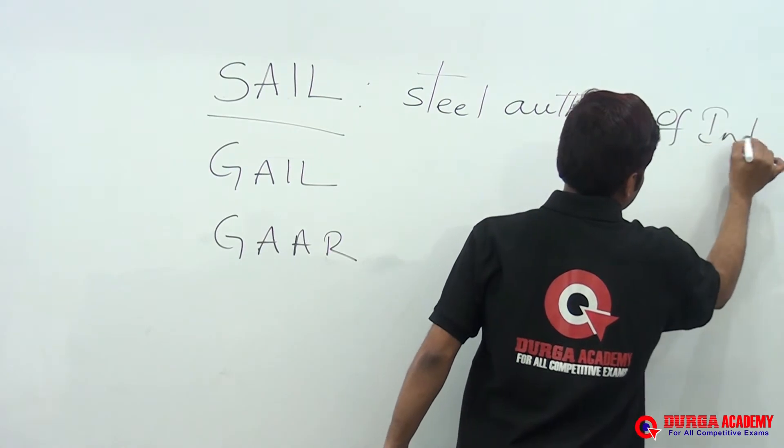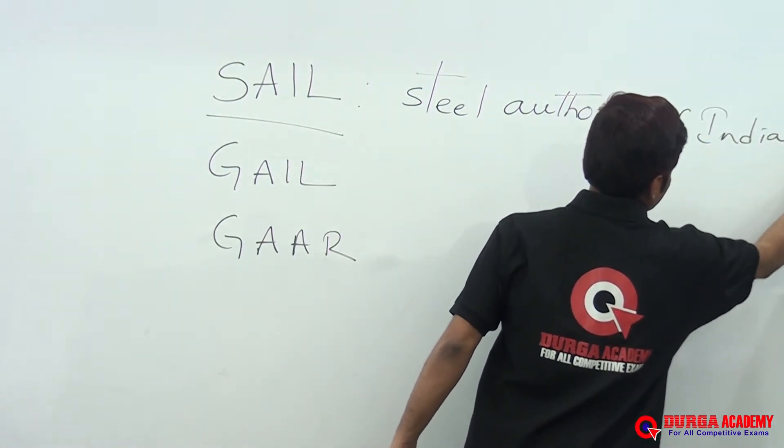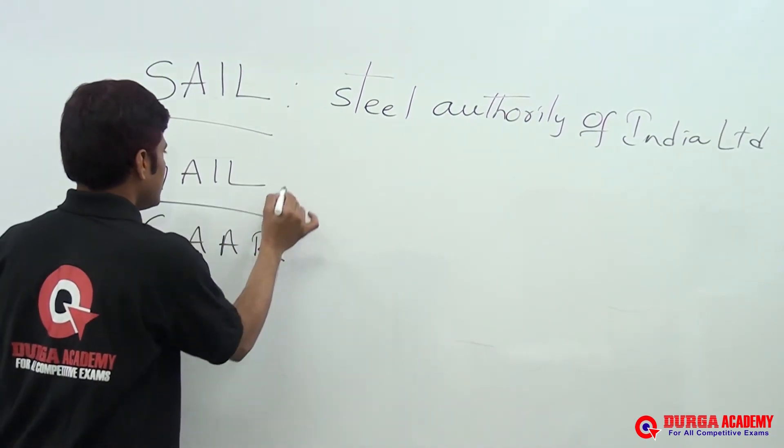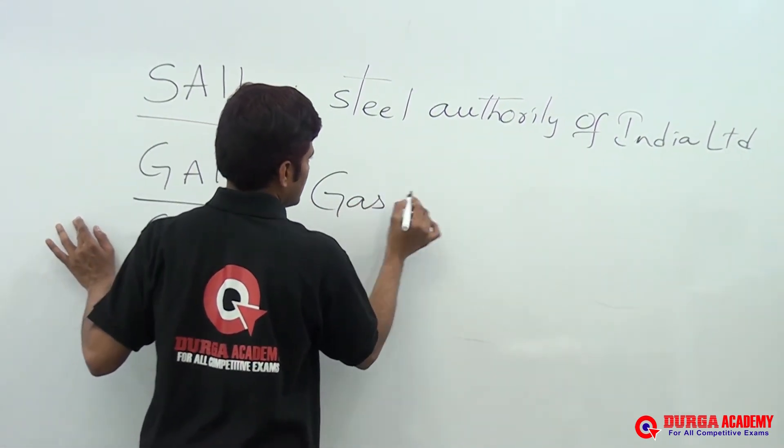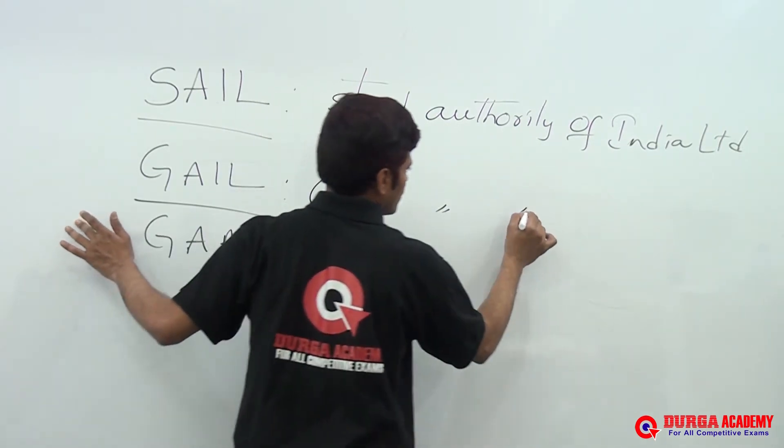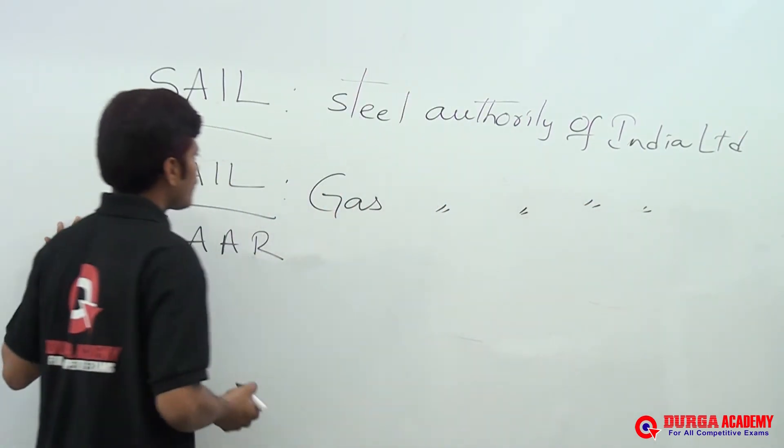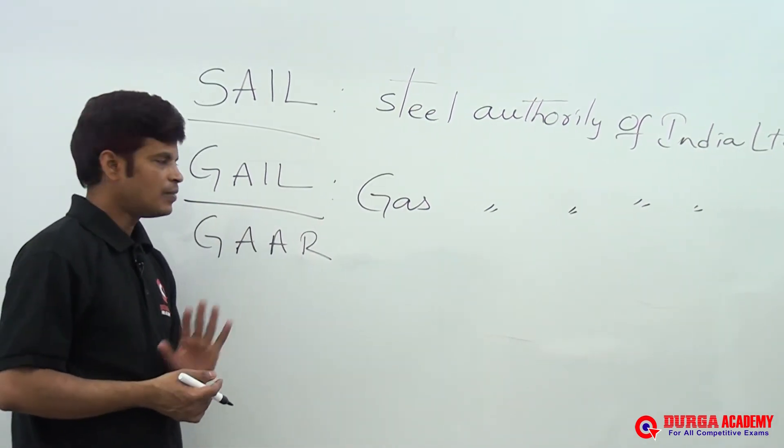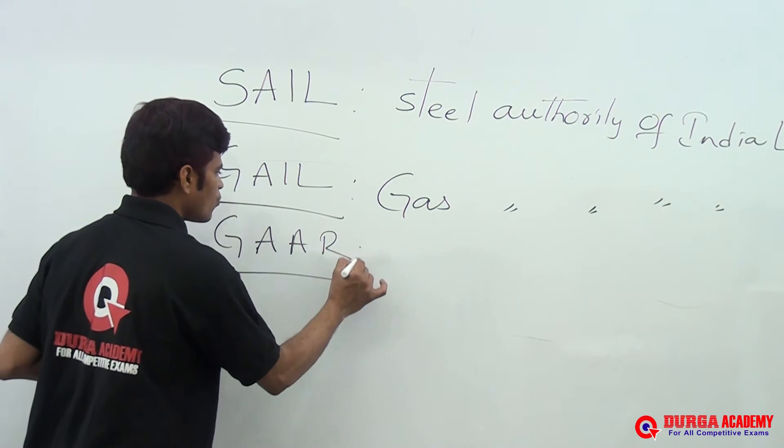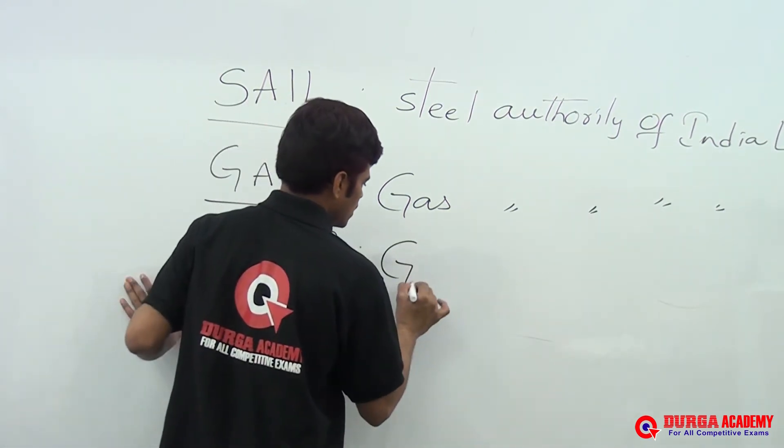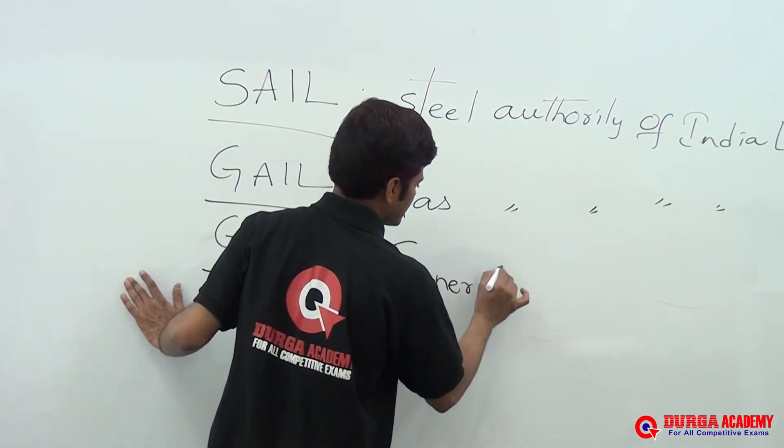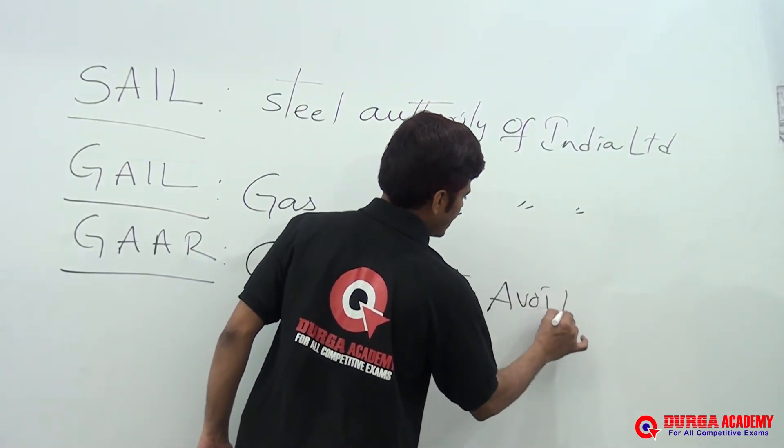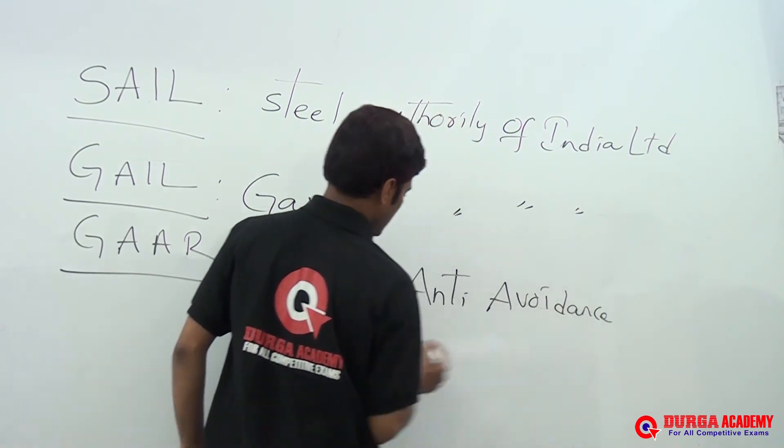GAIL - what is GAIL? Gas Authority of India Limited. Next, GAAR - what is GAAR? General Anti-Avoidance Rules.